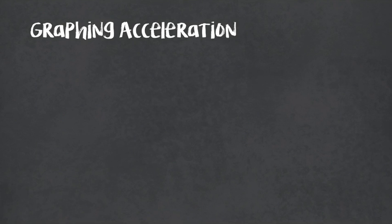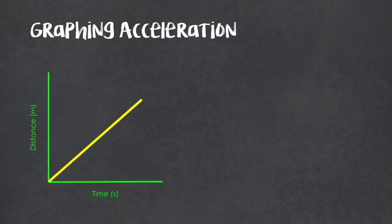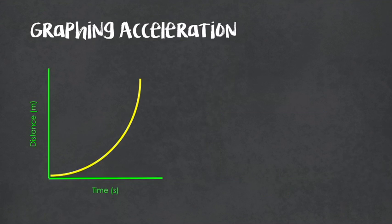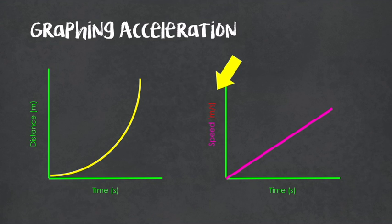Just like we did with speed, let's look at graphing acceleration. Here we have a distance versus time graph where the slope is speed, and we've got a constant speed moving away from our point of reference. If we graphed the acceleration of this object, it would be a flat line because our speed is not changing over time. Now let's look at an example without constant speed — here the object is still moving away from the reference point, but the curved line tells us speed is not constant; it is increasing over time. That means we have a constant acceleration.